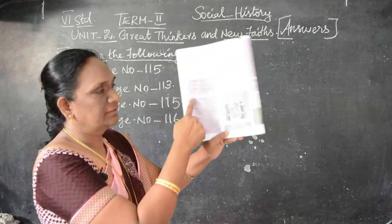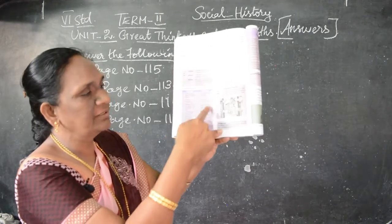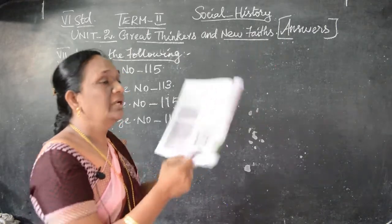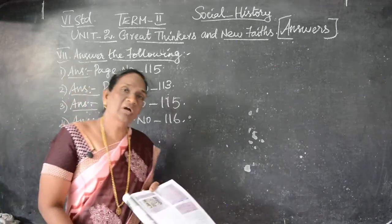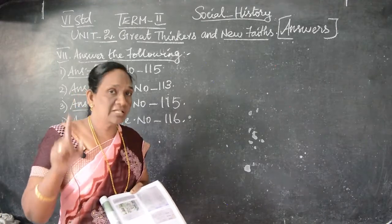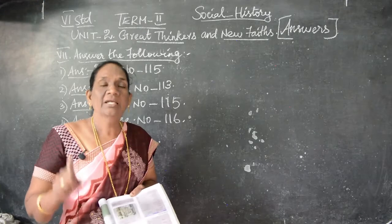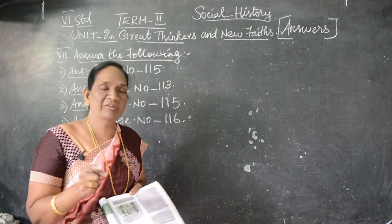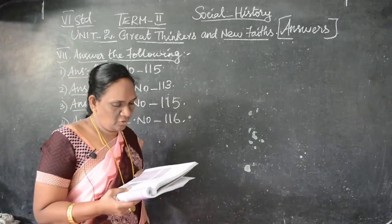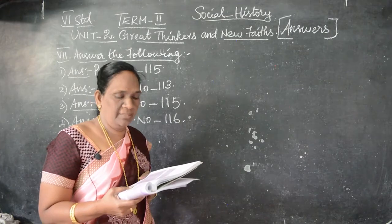In the white color box on this page, you have Buddhist sects — Hinayana and Mahayana. They give you five points. If they ask you in a detail answer, you write all five points. If they ask you in a short answer, you write any three points. First: Hinayana did not worship idols or images of Buddha; Mahayana worshipped images of Buddha.